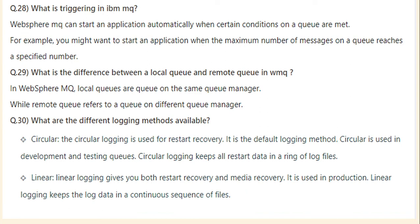What are the different logging methods available in IBM MQ? There are two methods: circular and linear. Circular logging is used for restart recovery — it is the default logging method, typically used in development and testing. It keeps all restart data in a ring of log files. Linear logging gives you both restart recovery and media recovery — it is used in production and keeps log data in a continuous sequence of files.